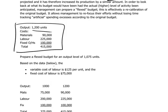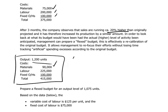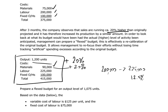One can see, for example, that materials costs are directly associated with the number of units produced. The output level went up by 20%, and the materials costs have in fact gone up by 20% as well. The labor costs, however, have not gone up by 20% — they've gone from $200,000 to $225,000, representing an increase of only 12.5%.